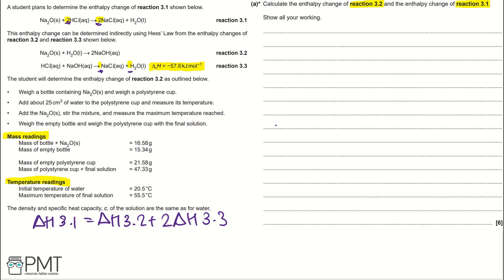In this question, we're going to be using the equation MC delta T equals Q, where Q is measured in joules. We're told in the question that the density and specific heat capacity C of the solution are the same as water. In our data sheets, we get given the specific heat capacity of water, and it's 4.18. This is a value you don't need to know as you get given it in the exam.